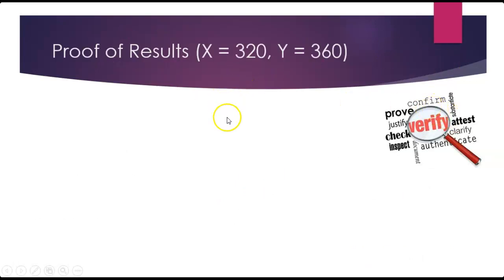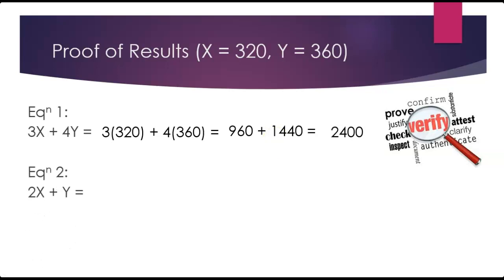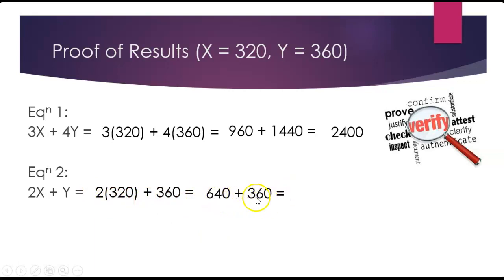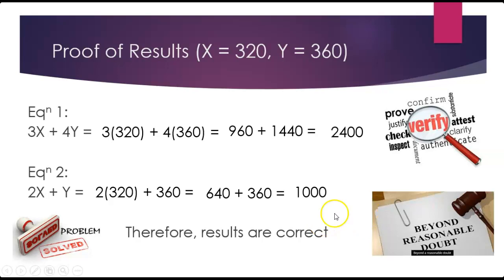Now, just to prove that these answers are correct — which is something we can do with simultaneous equations — we're going to put these results into the original equations. For equation 1: 3 times 320 plus 4 times 360 equals 960 plus 1440, which gives us 2400. That proves it works for equation 1. For equation 2: 2 times 320 plus 360 equals 640 plus 360, which gives us 1000. That proves it works for the second equation as well, confirming that our results are correct. We have proven beyond a reasonable doubt that our answers are correct.